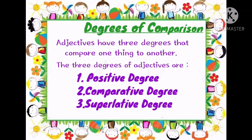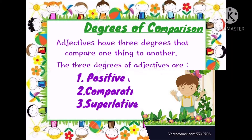The three main degrees of adjectives are: first is positive degree, second is comparative degree, and third is superlative degree. Now let's study about these three degrees of comparison in a bit of detail.